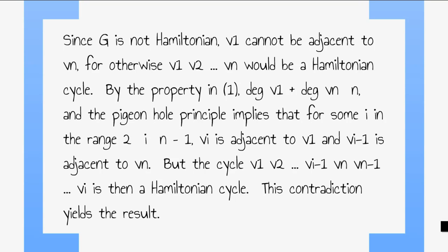And the pigeonhole principle implies that for some I in the range, 2 is less than or equal to I, which is less than or equal to N minus 1. VI is adjacent to V1 and VI minus 1 is adjacent to VN. But the cycle V1, V2, through VI minus 1, VN, VN minus 1, all the way to VI, is then a Hamiltonian cycle. This contradiction yields the result.